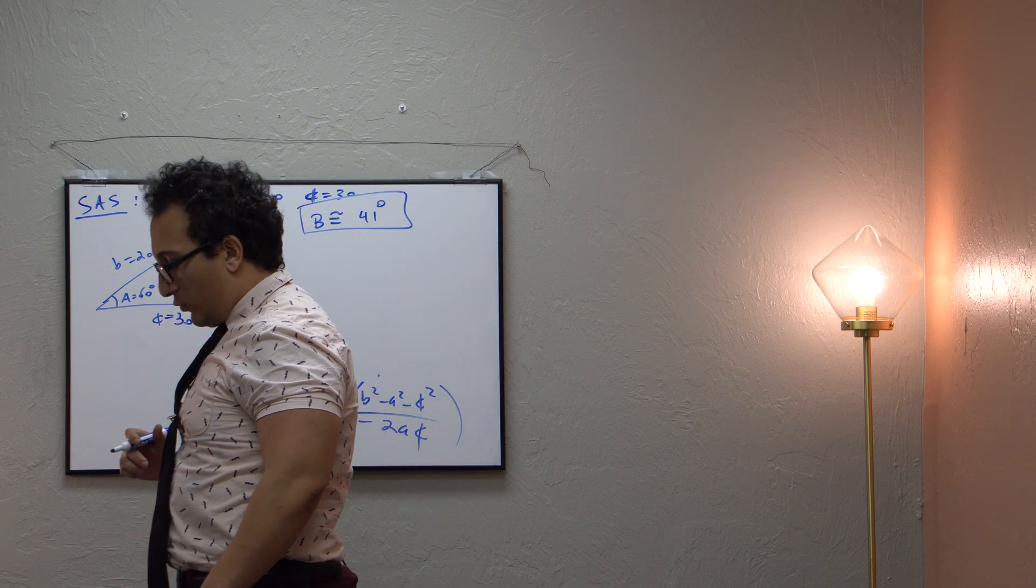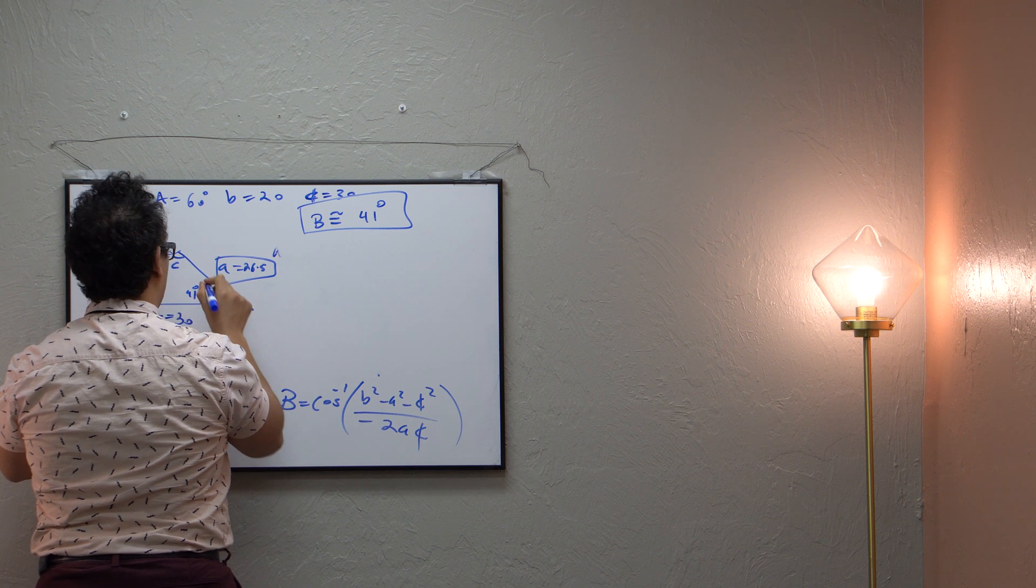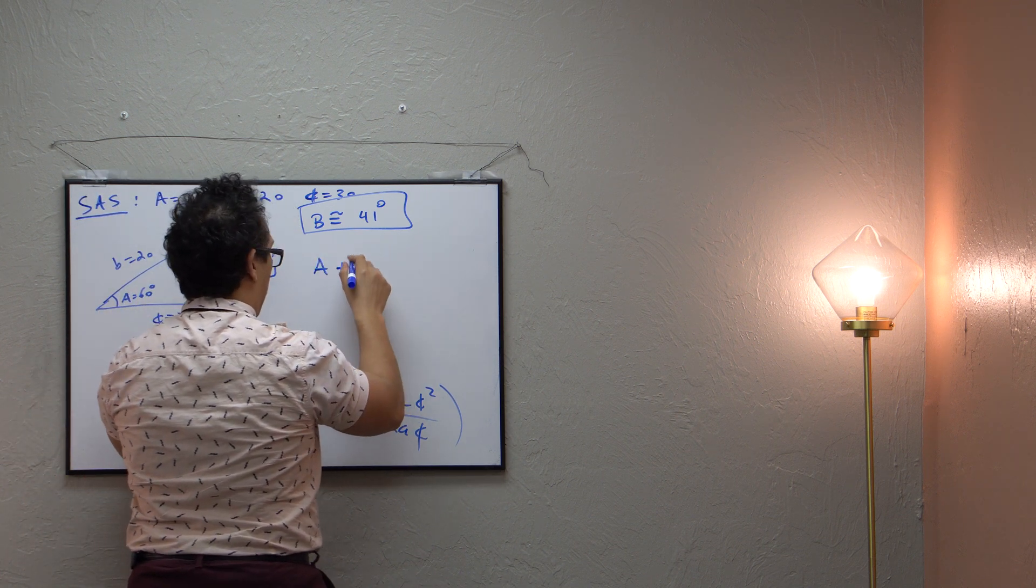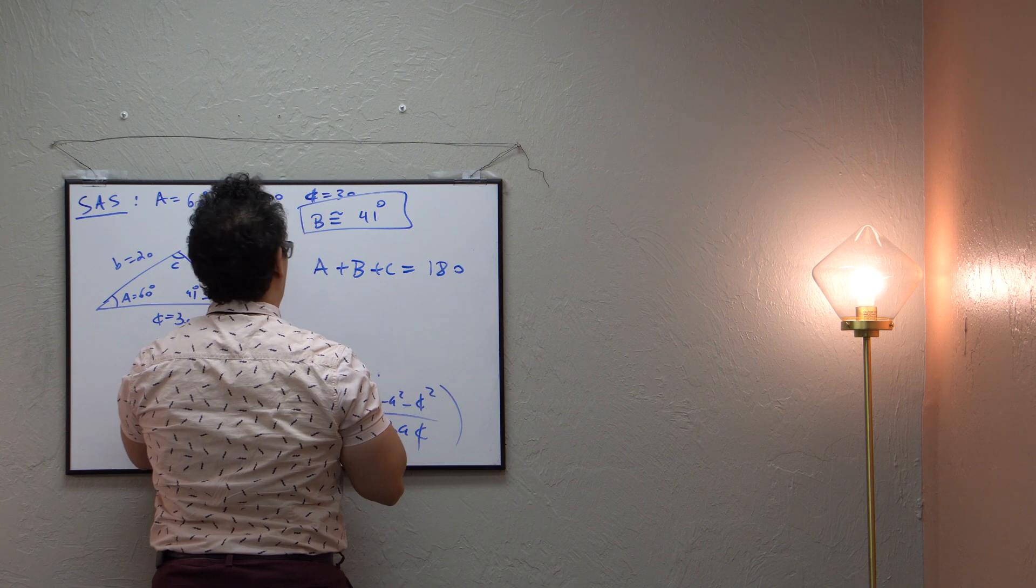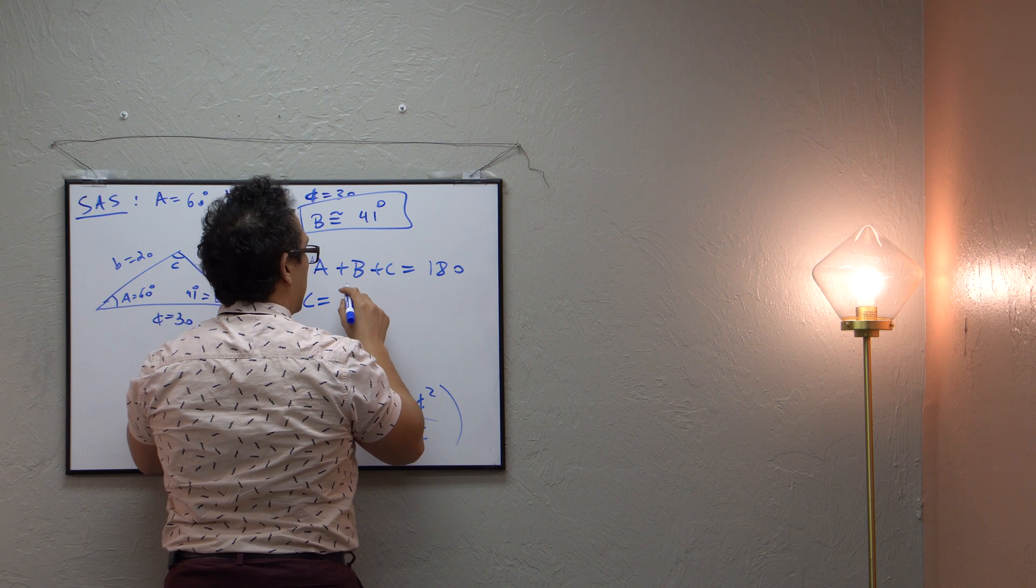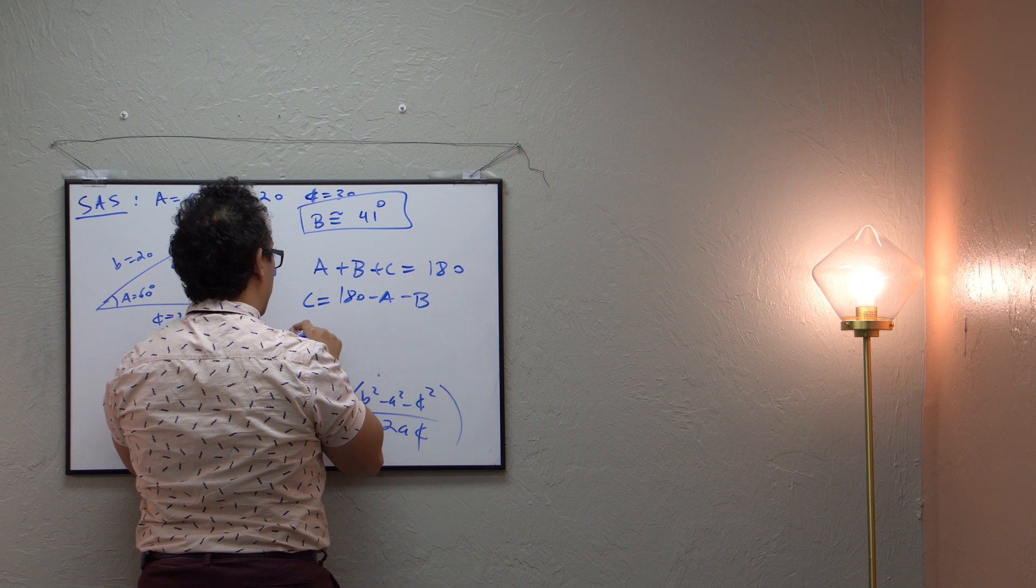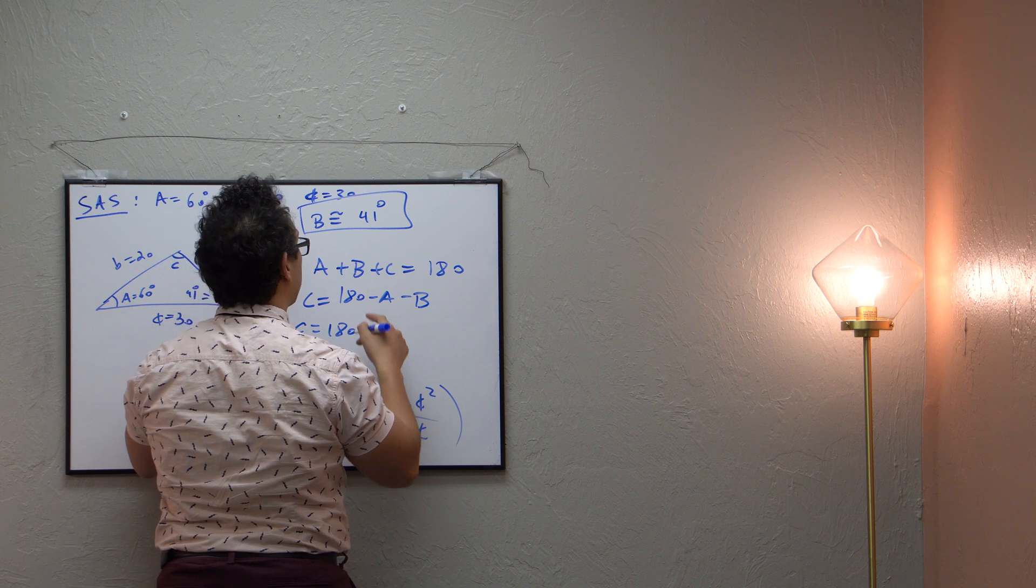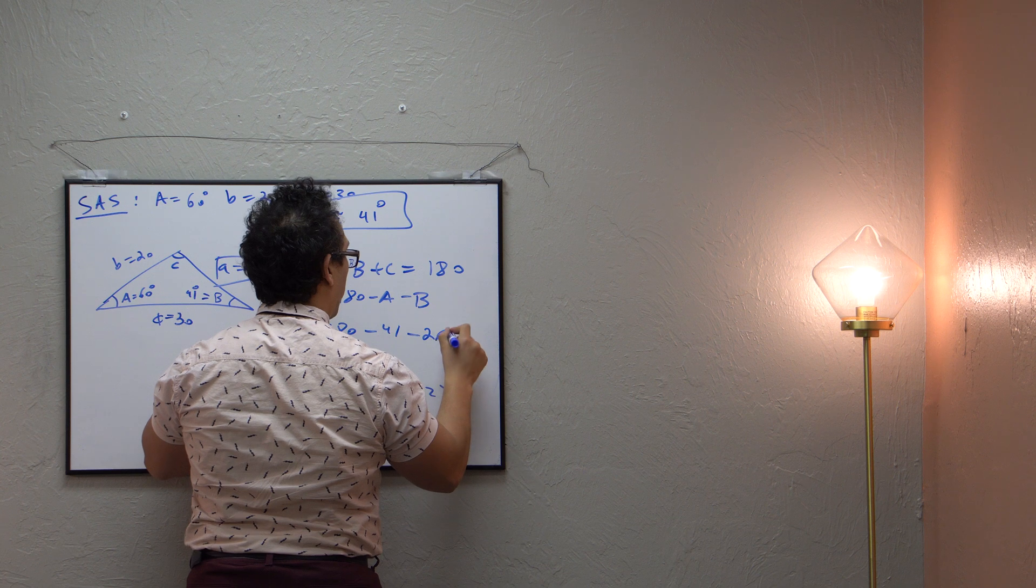So moving on, let's find that last angle. Since we know b, this is equal to 41 degrees. To kill off the problem, we know that a plus b plus c should be equal to 180. So I want to solve for c. So I get c is equal to 180 minus a minus b. And we know a and b. So c is equal to 180 minus 41 minus 26.5.